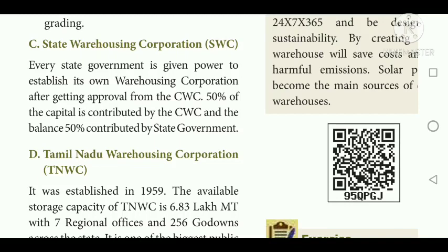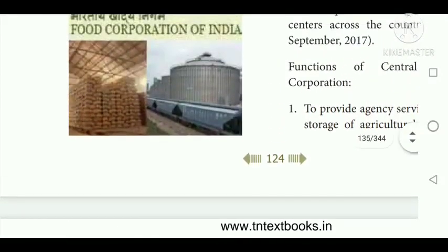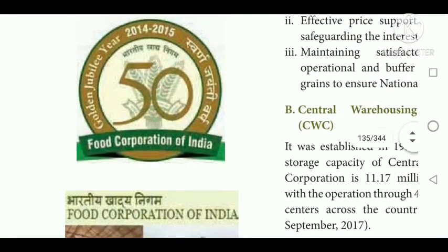Tamil Nadu Warehousing Corporation has nearly 6.83 lakh metric tons capacity with 7 regional offices and 256 godowns across the state — it is one of the biggest public warehouses operating in the state, offering logistics services to a diverse group of clients. To summarize today's class: we studied the meaning of warehouse and warehousing, different functions of warehousing, advantages and disadvantages of warehousing, warehousing in India, and the main warehousing agencies in the public sector. Study well, do the assignment, and prepare for your monthly test. Thank you, students.